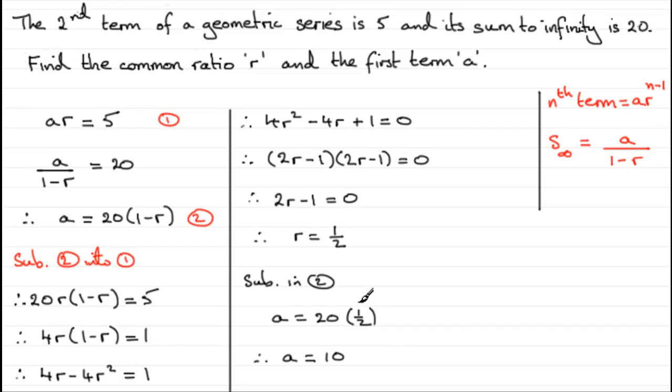OK. Well that's essentially the question done. It's well worth just noting at this point, not that one is being asked, how quickly this series tends to 20, a total of 20. Because we now know that the first term is 10.